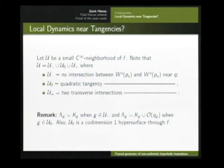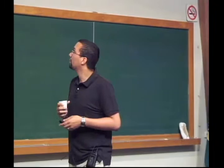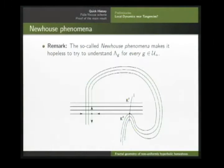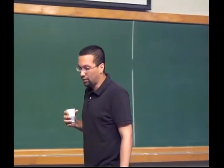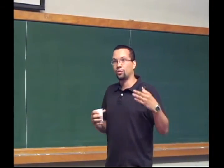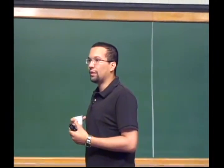In u-minus, there is no interesting dynamics coming from v — no tangency — so the local set coincides with the horseshoe. Nothing interesting happens in u-minus. At u-plus, the set is simply the horseshoe plus the orbit of the tangency, very simple to describe. But you can try with the very ambitious question of trying to understand all diffeomorphisms — however, as people here know, this is hopeless, especially because of what people refer to as the Newhouse phenomenon.